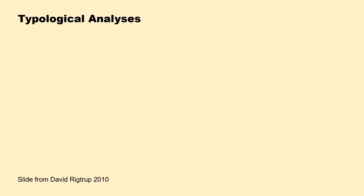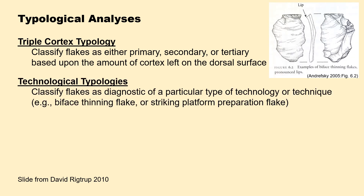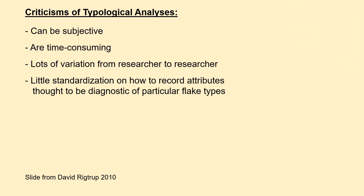A second set of analyses are typological analyses, of which we can define three. The triple cortex typology classifies flakes as primary, secondary, or tertiary based on the amount of cortex left on the dorsal surface. In technological typologies, you classify flakes as diagnostic of a particular type of technology or technique — for example, biface thinning flakes or a striking platform preparation flake. In application-of-load typologies, you classify flakes based upon what hammer type was used — for example, hard hammer versus soft hammer percussion. This approach can also be subjective and time-consuming, with a lot of variation from researcher to researcher, and little standardization exists on how to record attributes thought to be diagnostic of particular flake types.